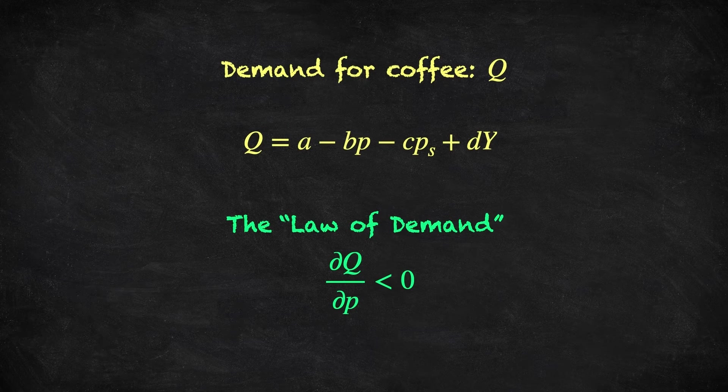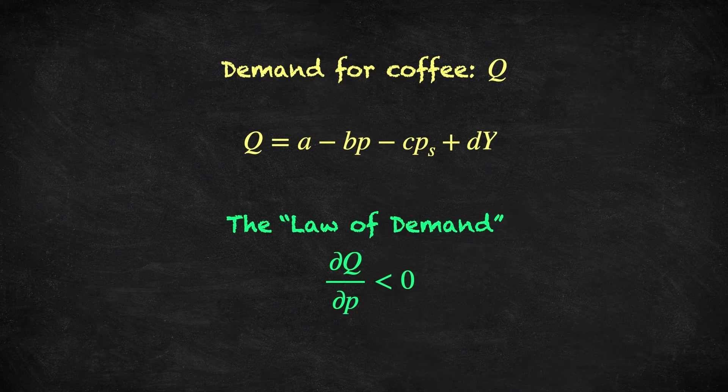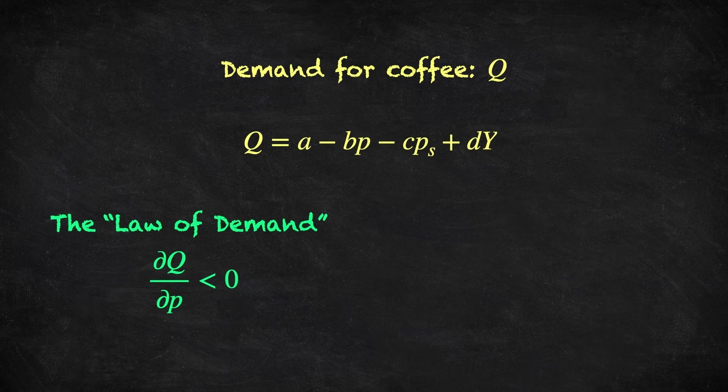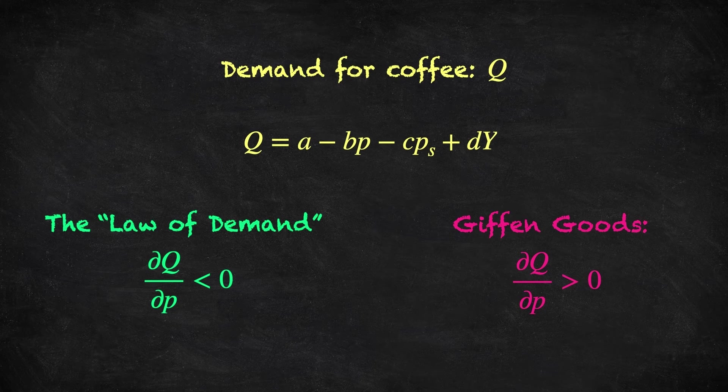Coming back to the law of demand, we now understand what this expression means. Now the law of demand is something we typically expect to hold, but there's nothing especially wrong with violating this so-called law. Later in the course, we'll learn a lot more about this. Goods that do violate this law, so goods where price increases lead to higher demand, are called Giffen goods, after the 19th century economist Sir Robert Giffen. It was suggested that during the Irish potato famine, because potatoes were such a large staple of the diet, and because such a high proportion of people's income was spent on potatoes, that when the price of potatoes went up, they simply stopped buying other goods, and so spent the remaining money on more potatoes.